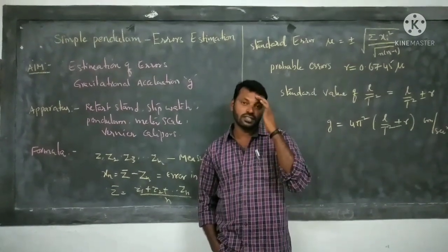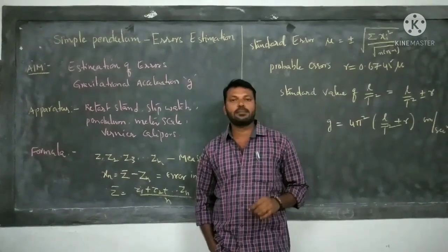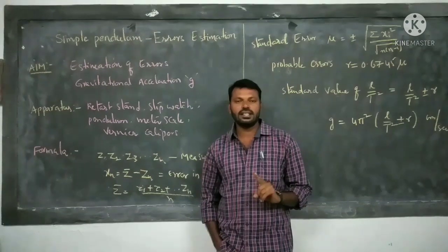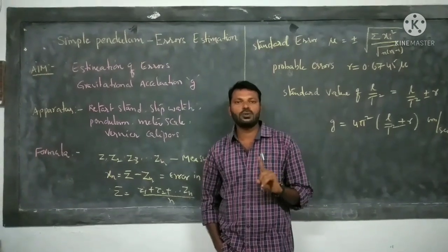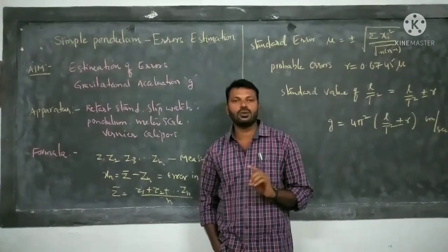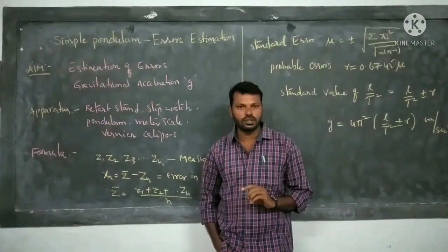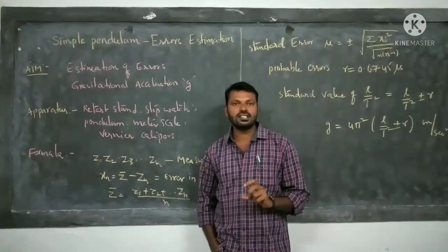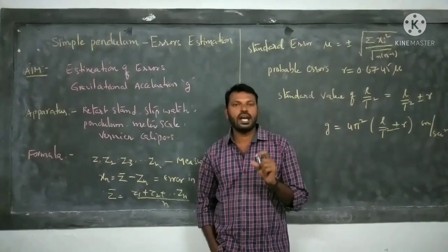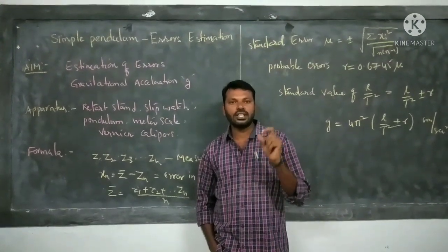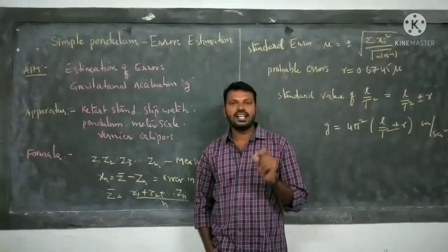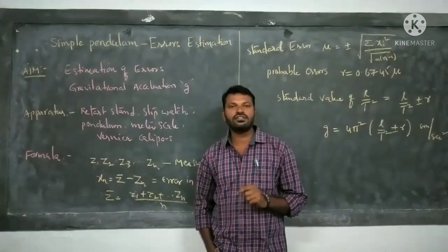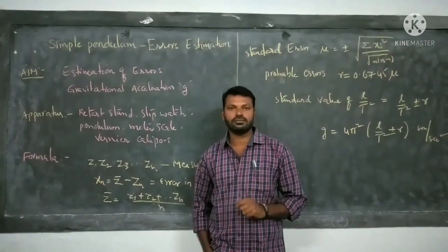Today I am going to discuss Experimental Physics — specifically how to estimate errors and how to draw a Gaussian distribution curve, and from those errors, how to calculate accurate acceleration due to gravity with the help of a Simple Pendulum.